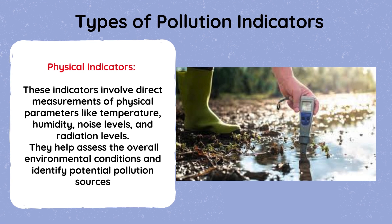Types of Pollution Indicators: Physical indicators. These indicators involve direct measurements of physical parameters like temperature, humidity, noise levels, and radiation levels. They help assess the overall environmental conditions and identify potential pollution sources.